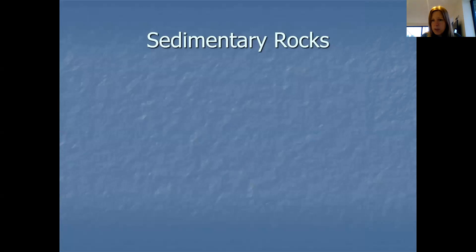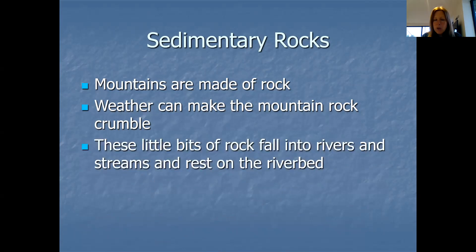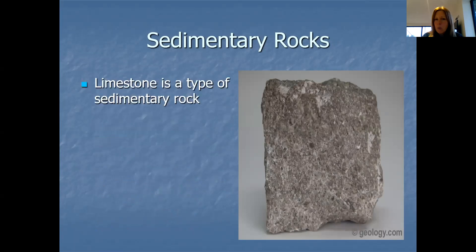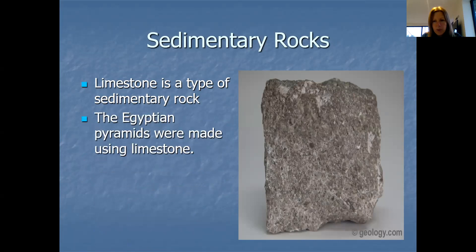Sedimentary rocks is our second type. We've already talked about how mountains are made from rock. Weather can make mountain rock crumble — lots of wind and rain damages and breaks down the bits of rock very, very slowly until we get little bits broken away. Those little bits of rock that have fallen off can go into rivers or streams and get moved along. We've got some examples there: sandstone and shale. Limestone is also a type of sedimentary rock, and because I know how much Year 3 love the Egyptians topic, the pyramids were made using limestone.